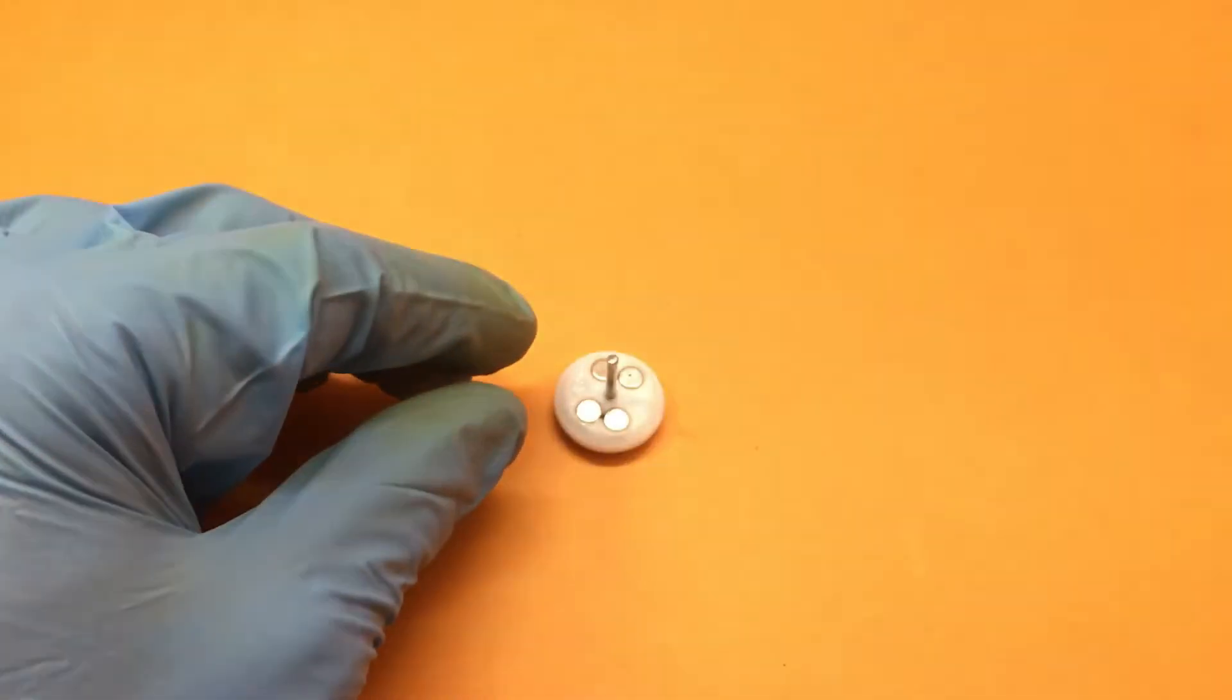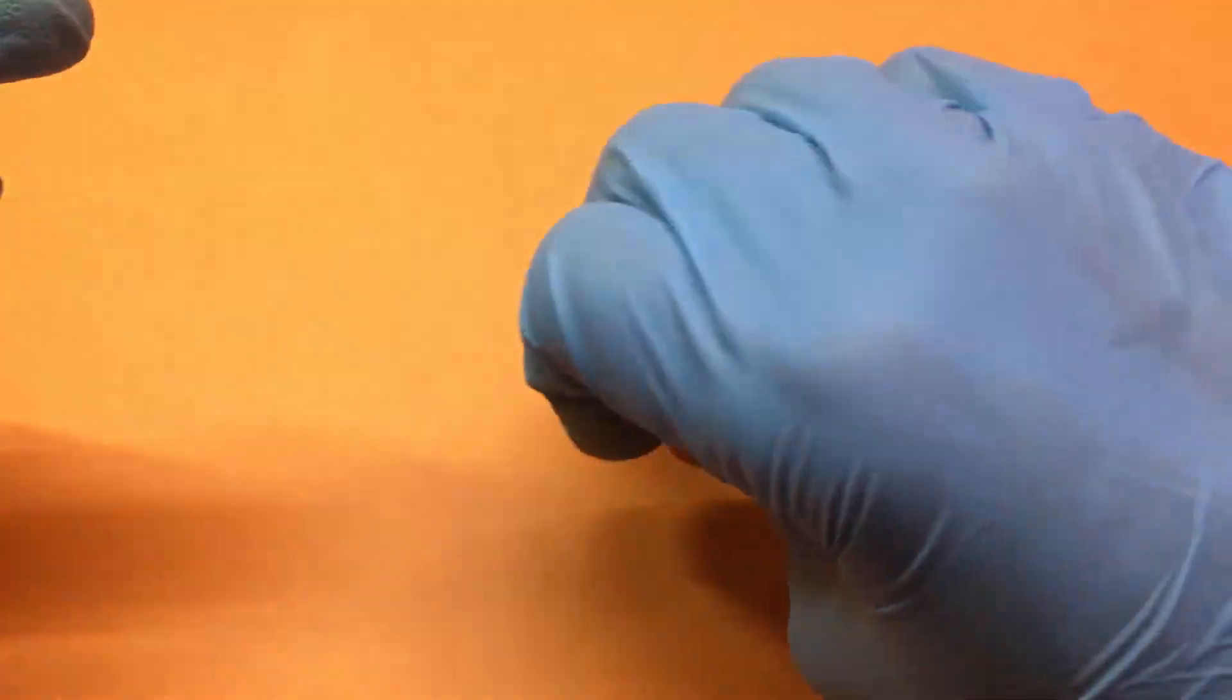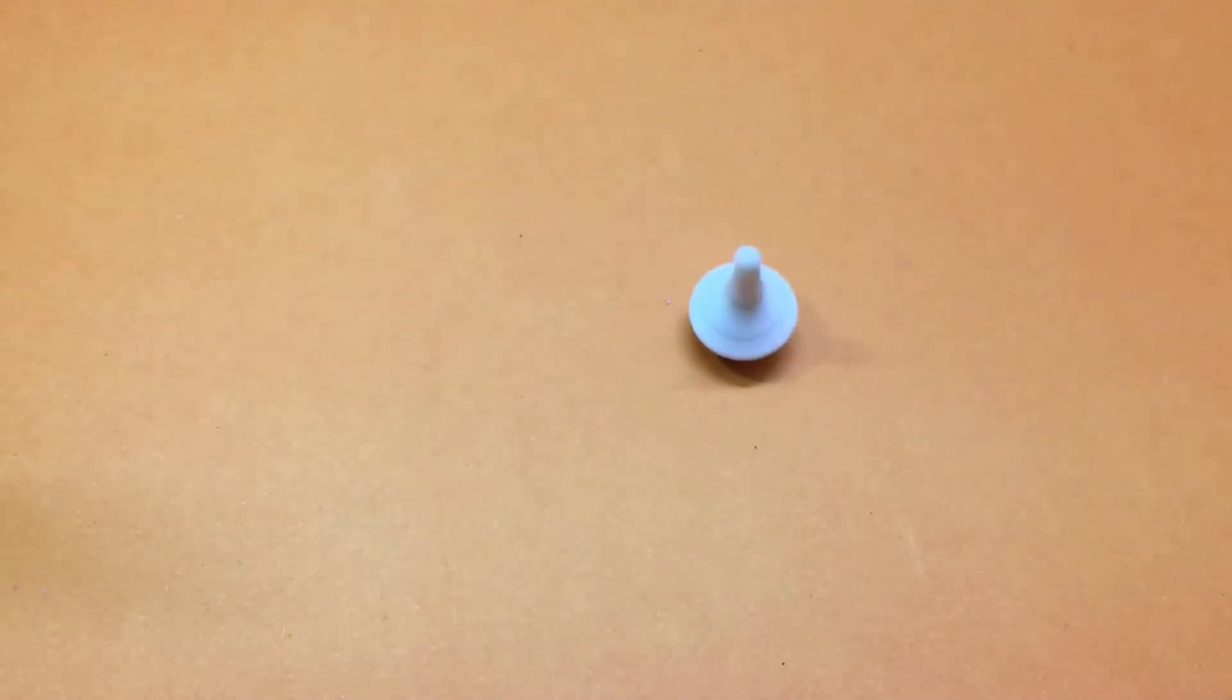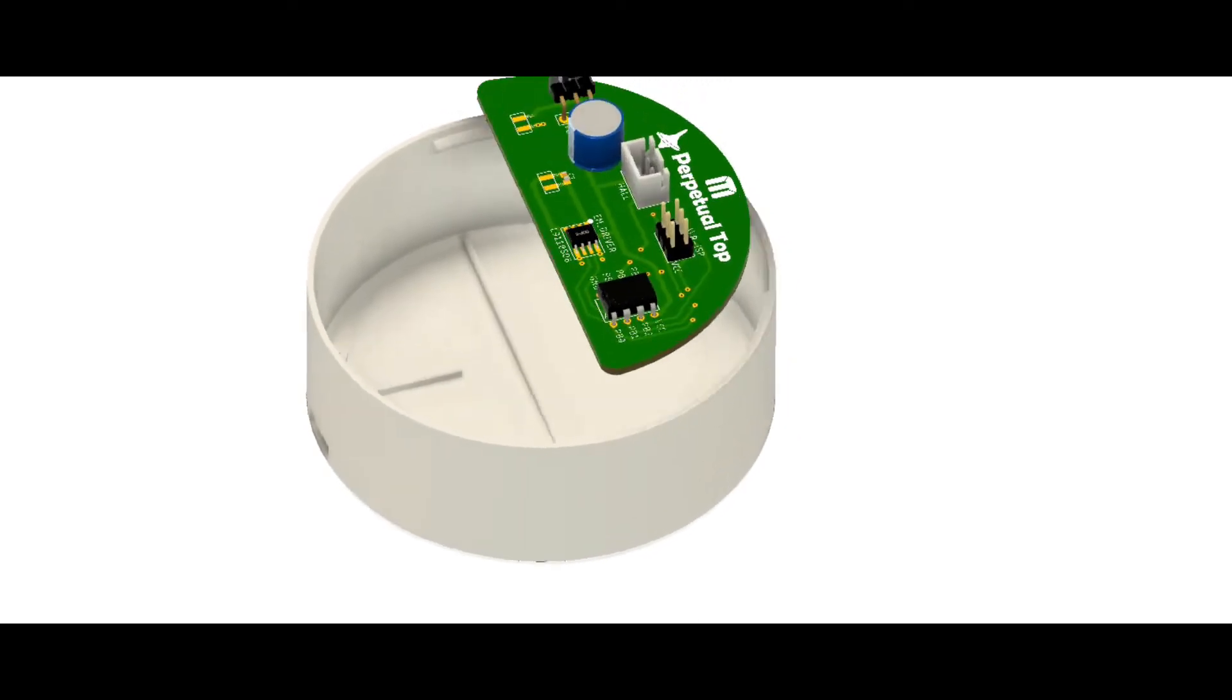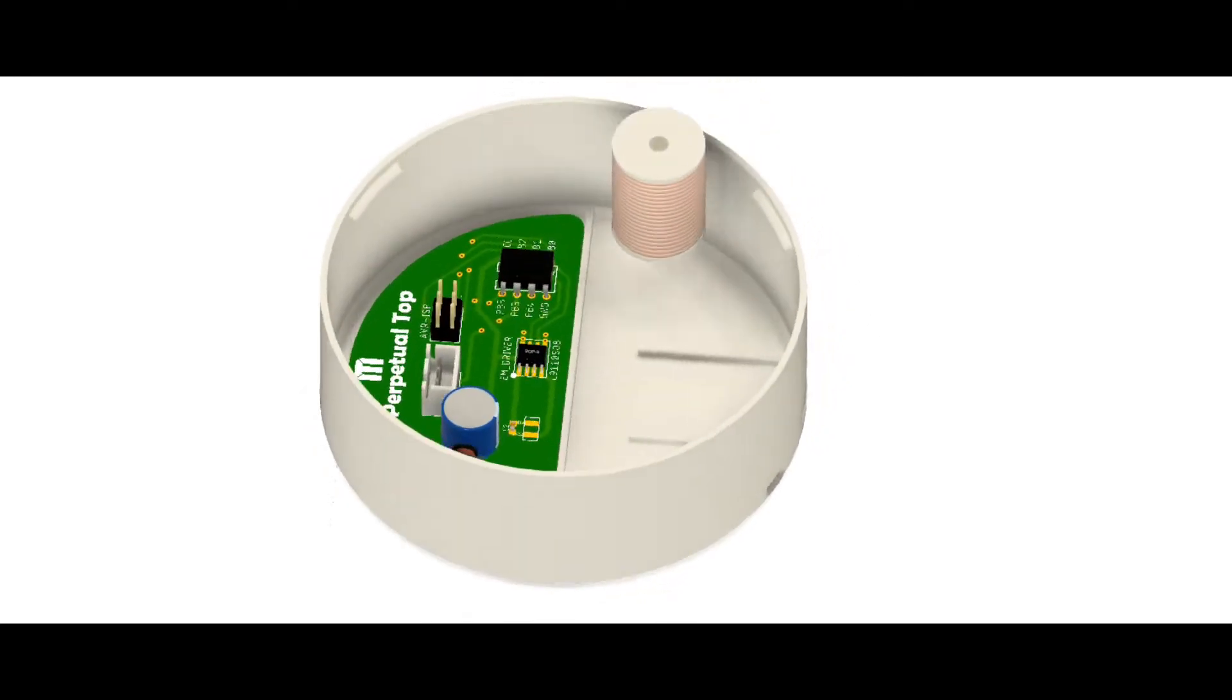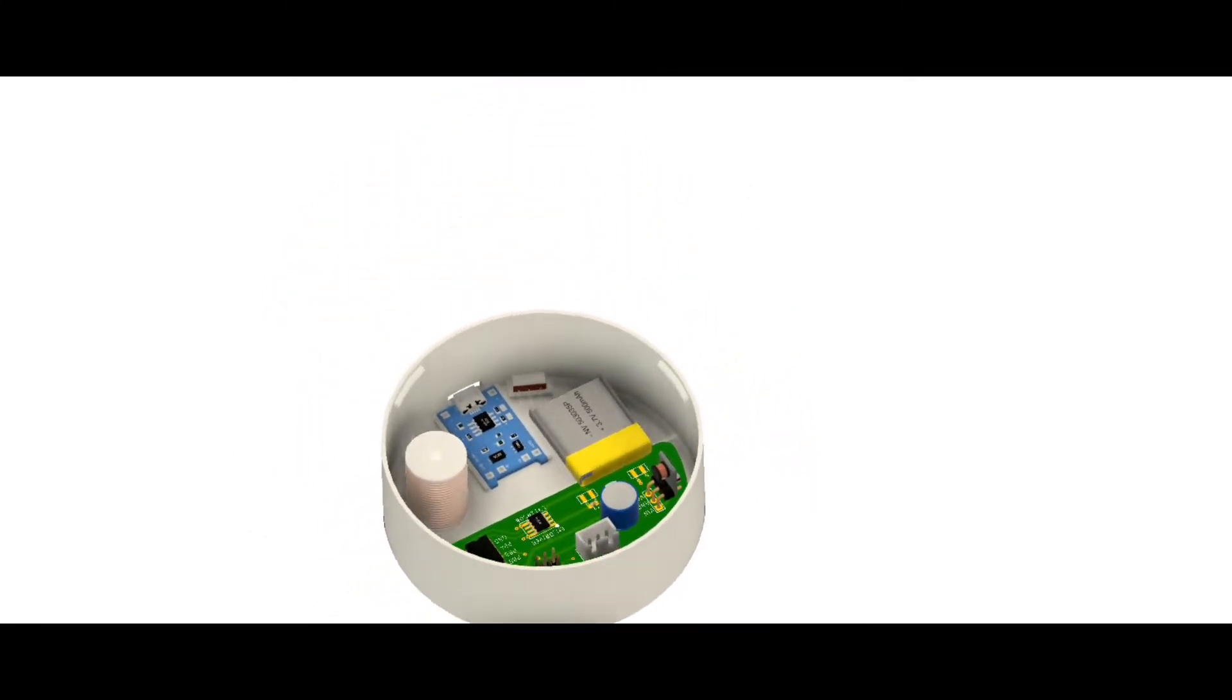So our spinning top is ready. Now let's move to the main assembly. This is just an animation for your reference to understand what will go where during the assembly procedure. All these 3D files can be found in the description below.